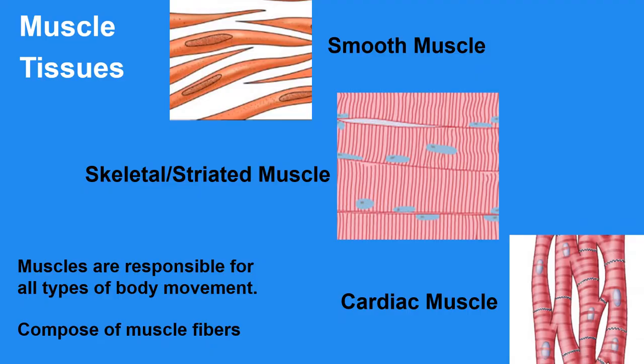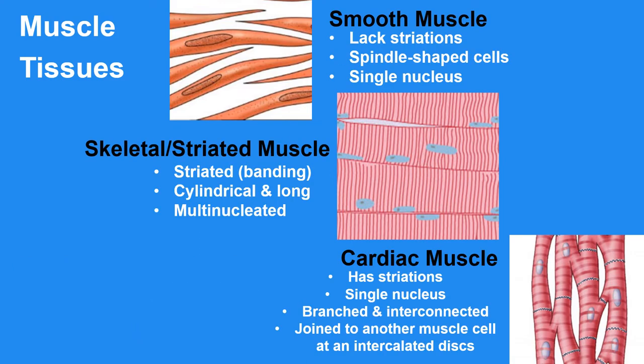The tissue responsible for nearly all types of body movement is muscle tissue. There are three types of muscle tissue in the vertebrate body: smooth, skeletal or striated, and cardiac muscle tissues, each of which has muscle fibers. Smooth muscle, which lacks striations, is found in the walls of the digestive tract, urinary bladder, arteries, and other internal organs. The cells are spindle-shaped.